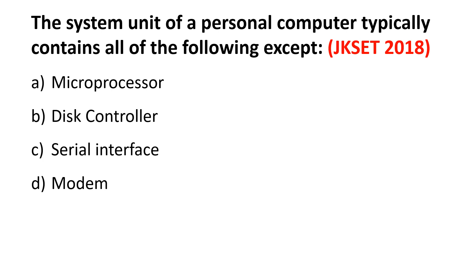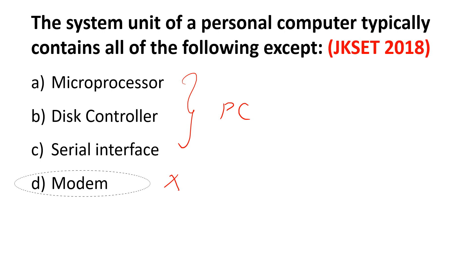Next question: The system unit of a personal computer typically contains all of the following except — microprocessor, disk controller, serial interface, or modem? The system unit contains a motherboard, microprocessor, and serial interface, but a modem is an external device. The right answer is D: modem — it is not typically inside the system unit.